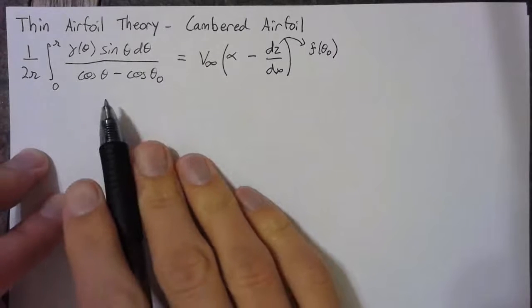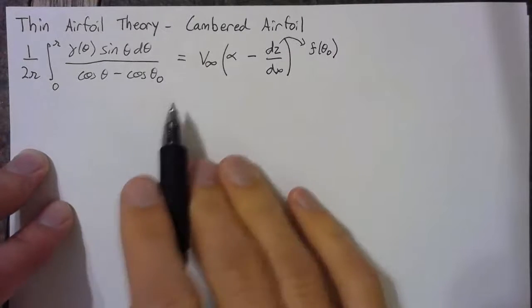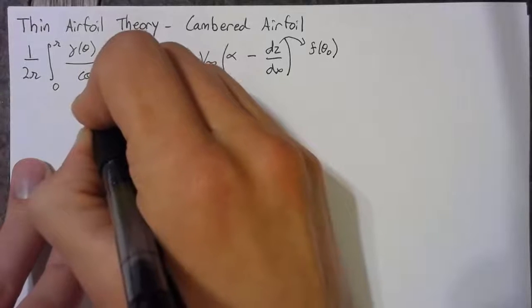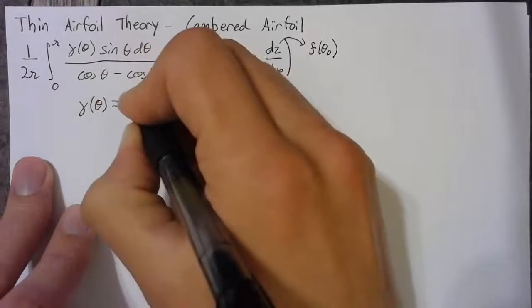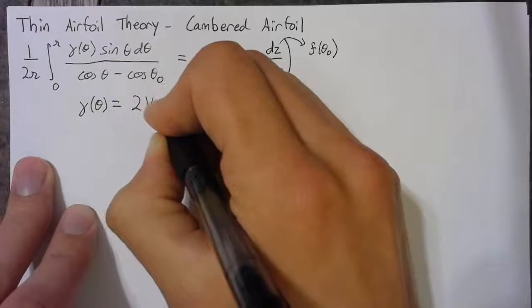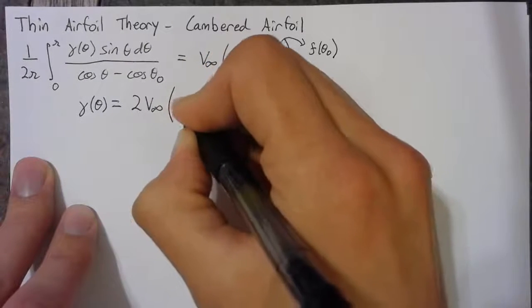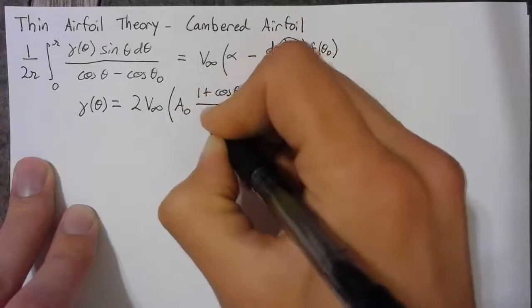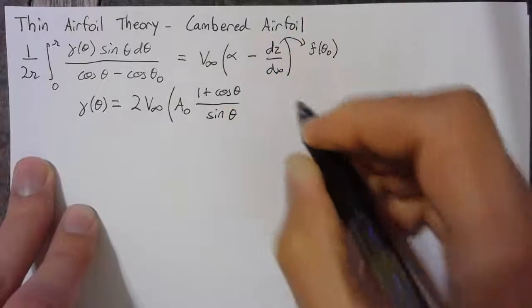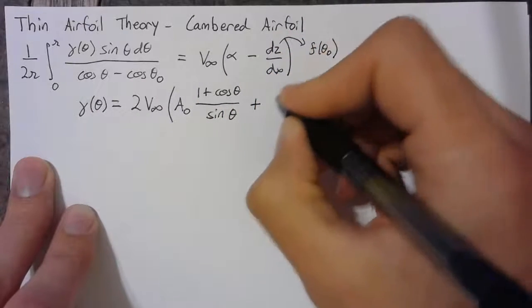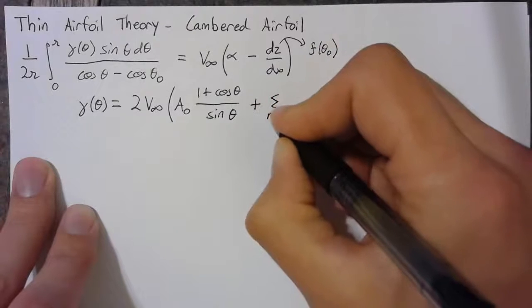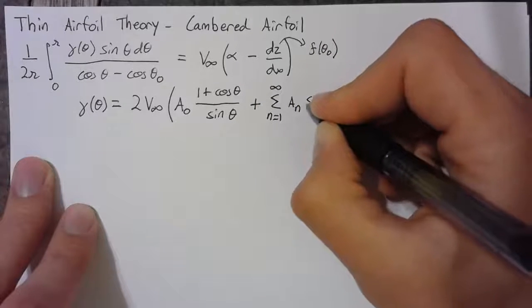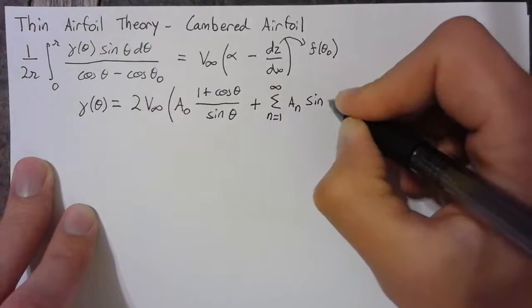We have a solution to this — it's given to us by the book. The math is a little hard, so we'll just skip to the solution. We have γ(θ) equal to 2 times V∞ times a₀ times (1 + cos θ) over sin θ, added to an infinite sum from n=1 to infinity of aₙ sin(nθ).